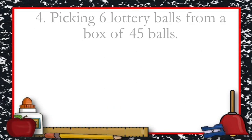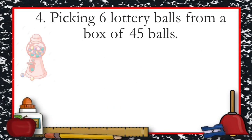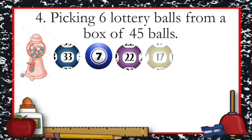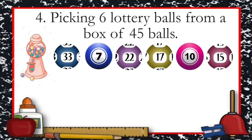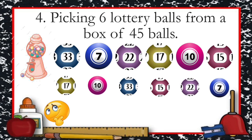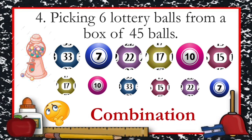How about picking six lottery balls from a box of 45 balls? The first ball is 33, second is 7, third is 22, fourth is 17, fifth is 10, and last is 15. If you return the balls and pick again, you might get 17, 10, 33, 15, and so on. Is it different from the first selection? No, it is not — so it illustrates a combination.